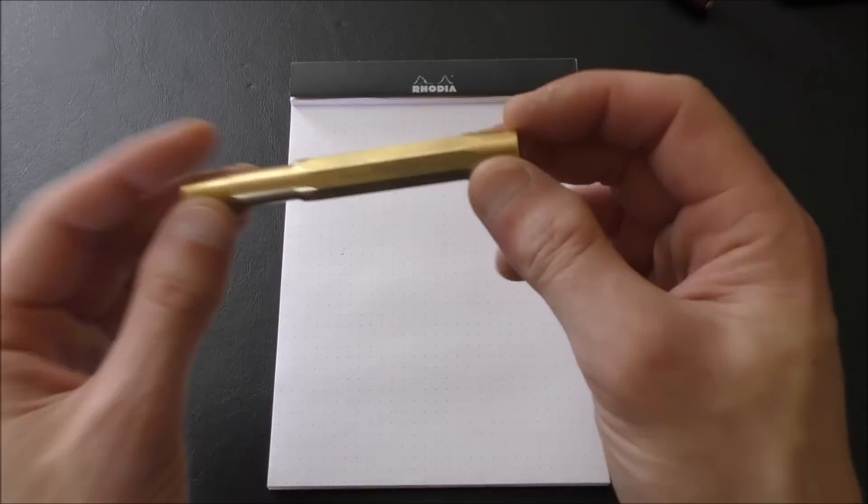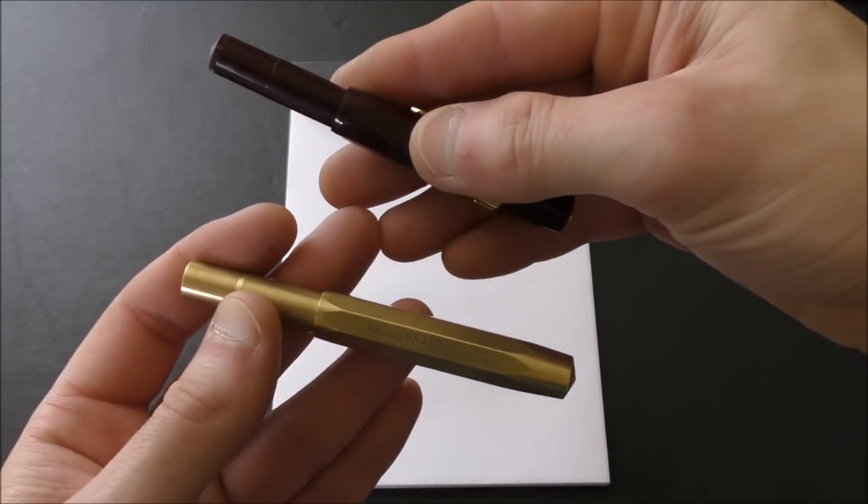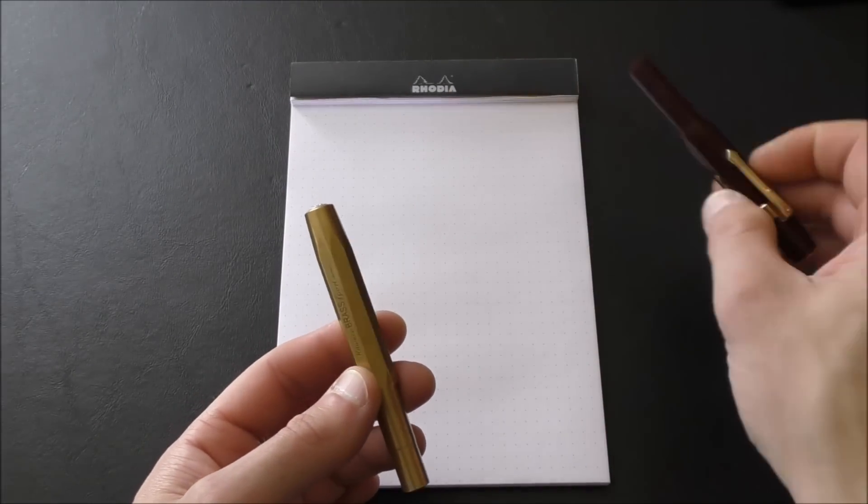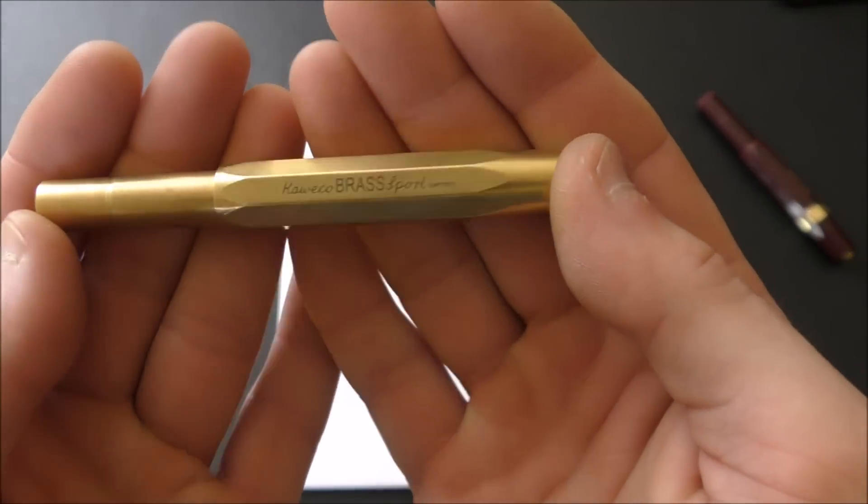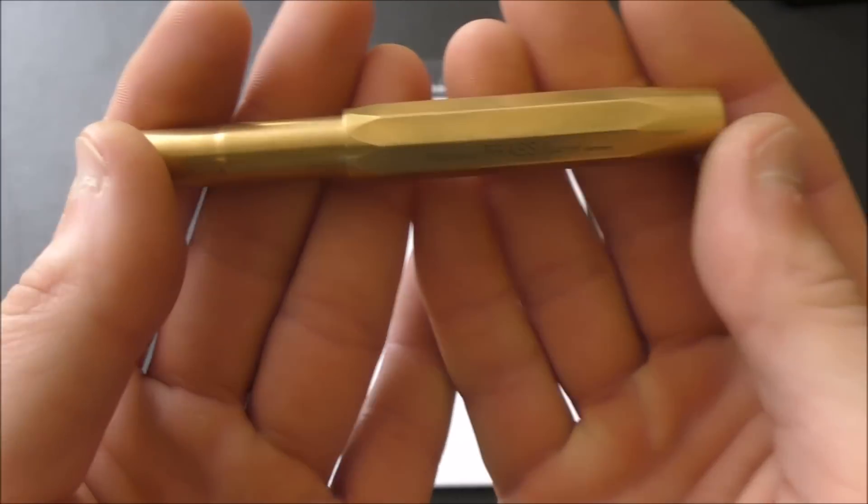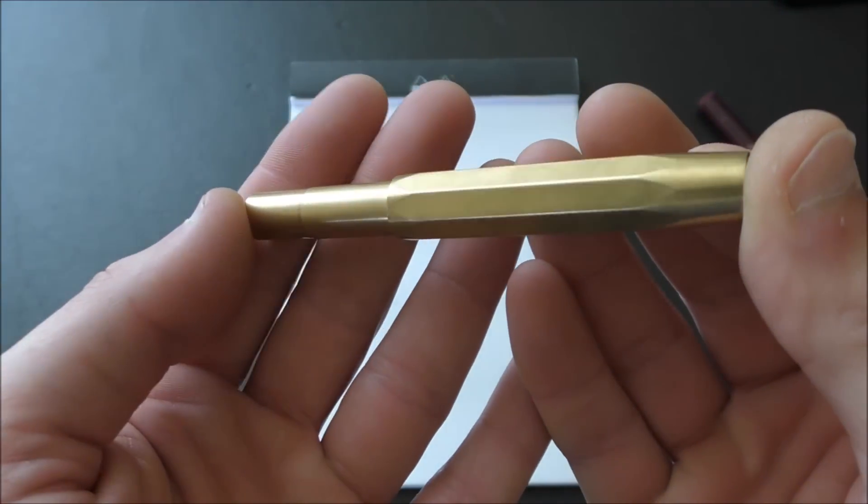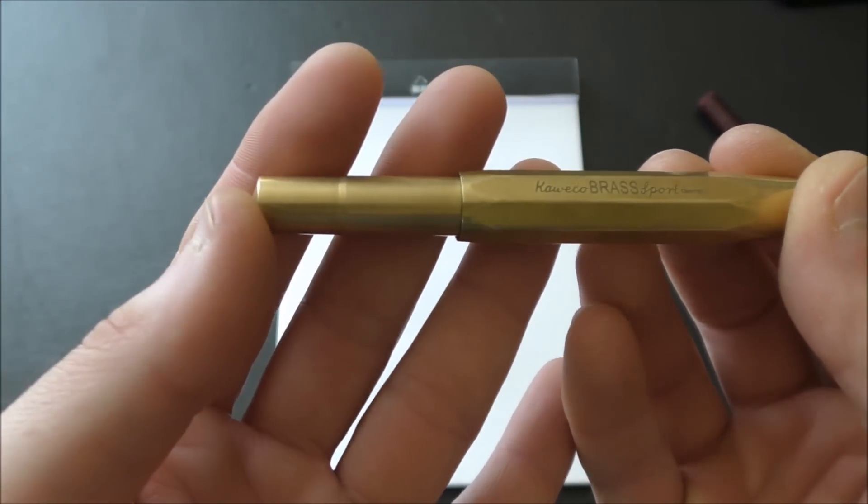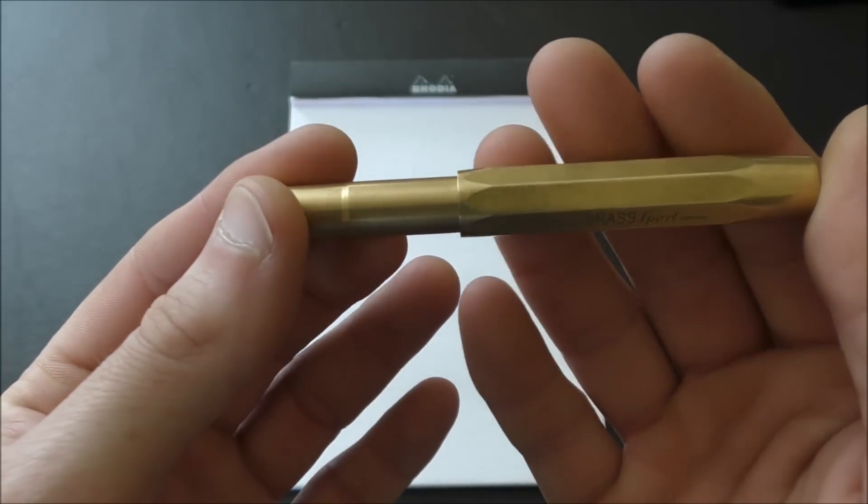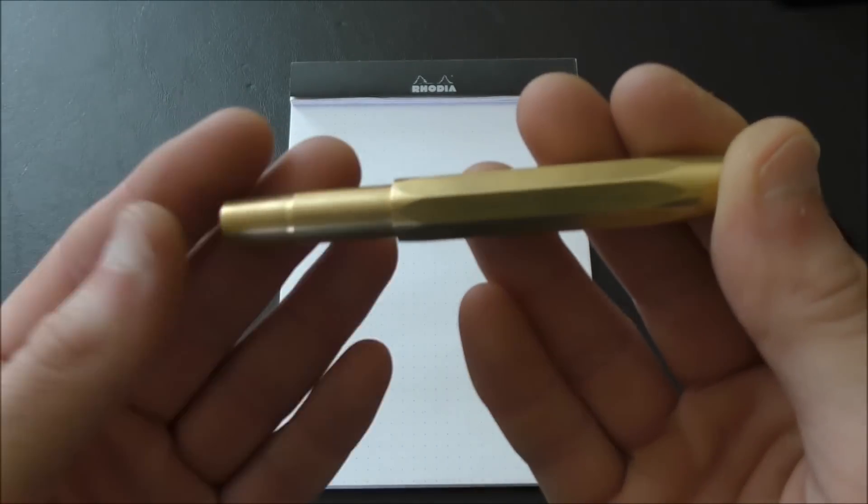So here we are, the Kaweco Brass Sport Fountain Pen. Let's point out some of the differences between this and the Classic Sport. Obviously, the major difference being that this is made of brass. This is made of plastic. Now this brass is very cool finish because it is sort of a raw brass. And as you use it, it's going to get a nice patina on it. It's really going to get scratched up and dinged up, especially if you throw it in your pocket, have it with your keys, change, things like that. I suppose if you wanted to, you could use something like Brasso or any sort of metal polisher on this and really shine it up after a while. But I like the patina. I think that's one of the cooler aspects of using brass for this pen.